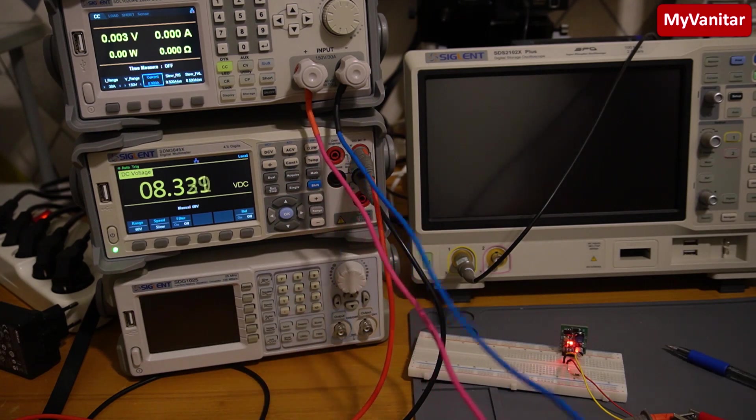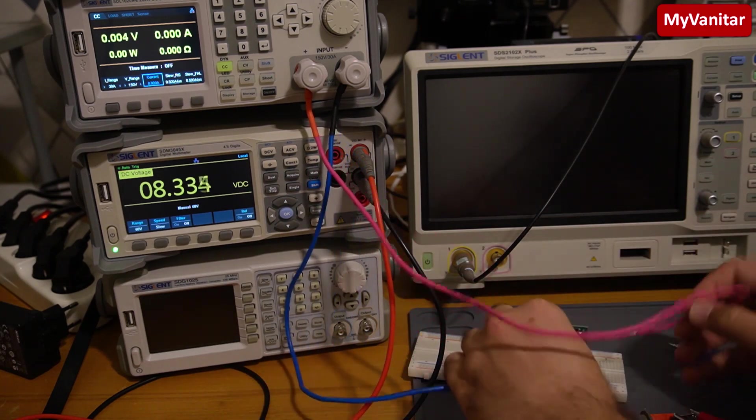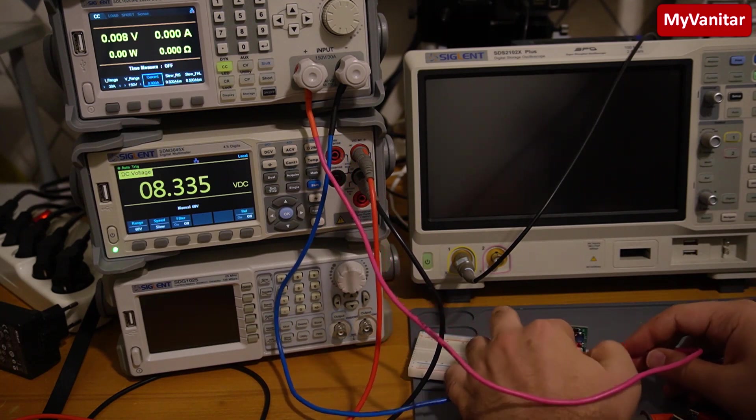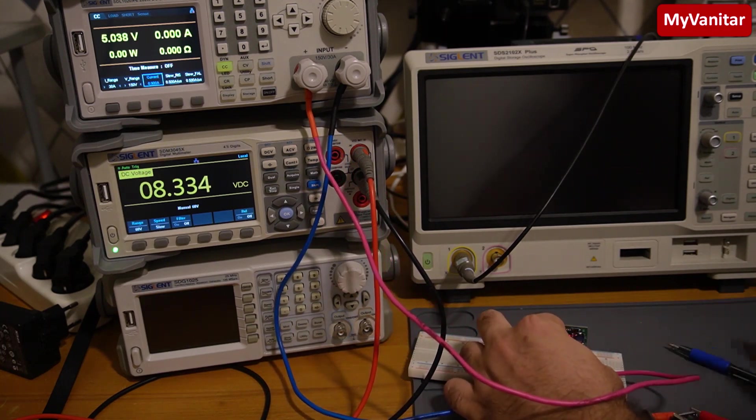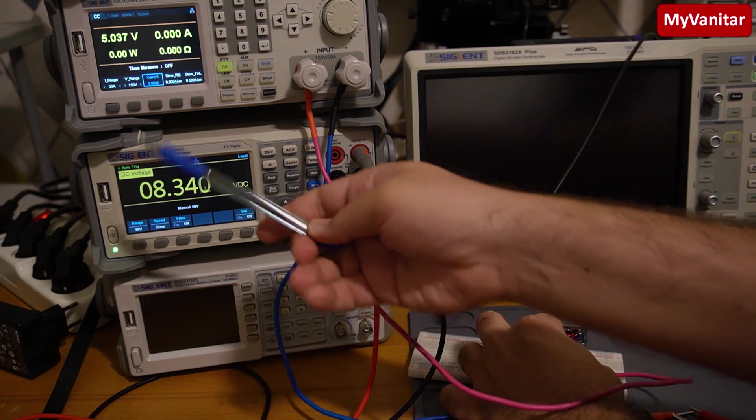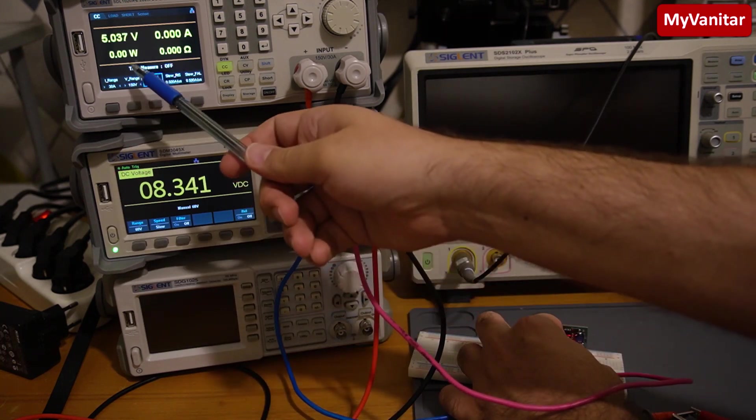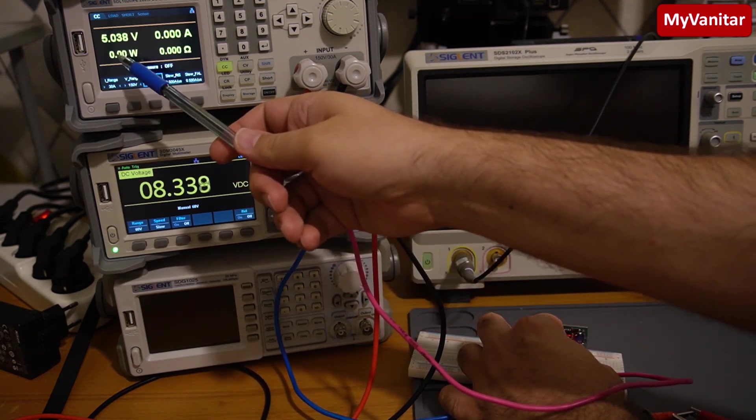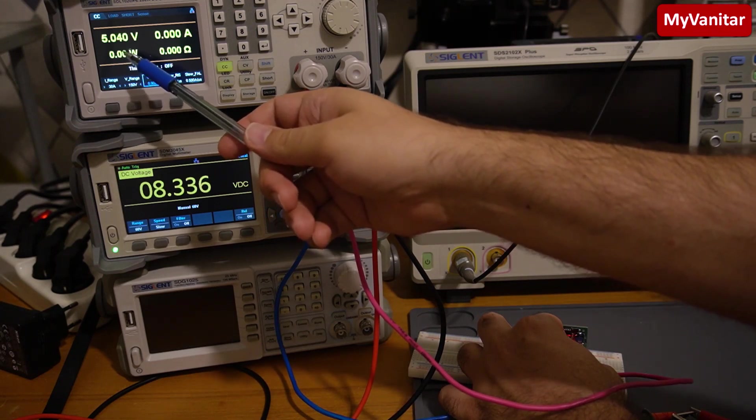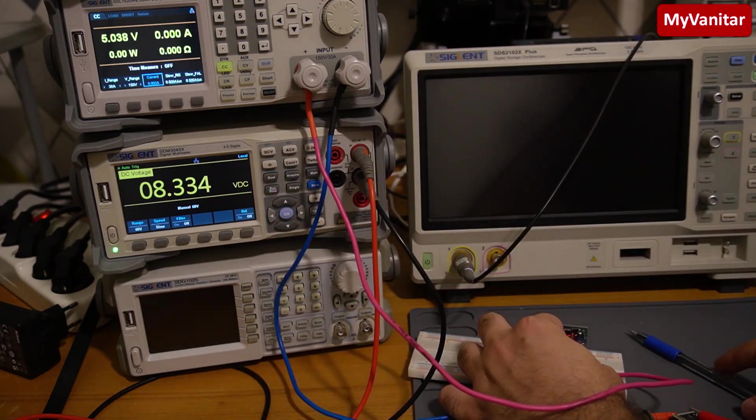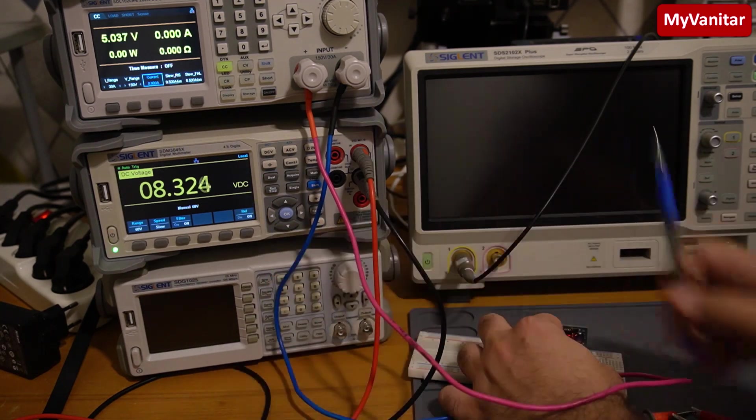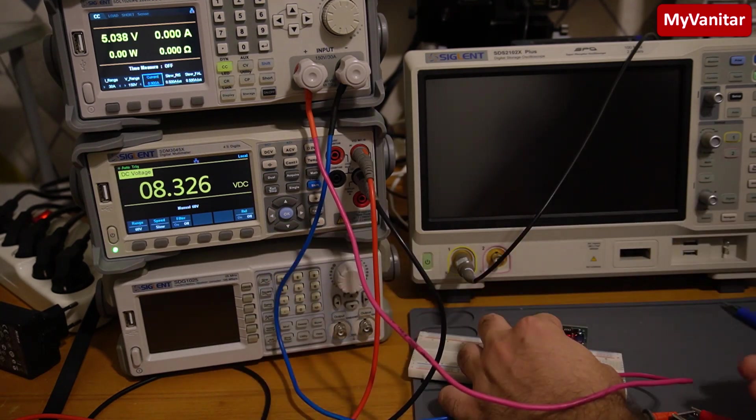So the minimum input voltage is 8 to get 5 volts from the output. For the first test, let me connect the DC load wires to the buck converter. As you see, without any load or anything, the output voltage is fixed on 5.03, okay?